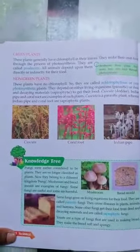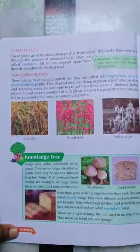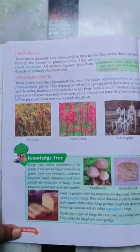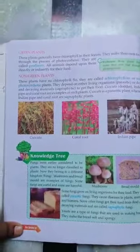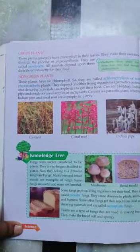First, green plants. These plants generally have chlorophyll in their leaves. They make their own food through the process of photosynthesis. They are called producers. All animals depend upon them directly or indirectly for their food.